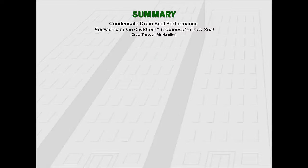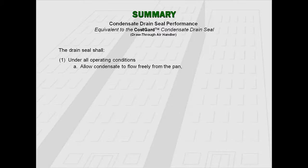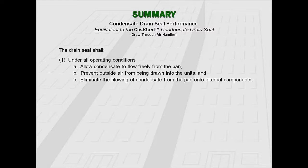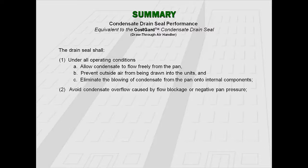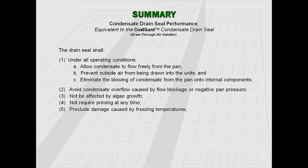A reliable equivalent to CostGuard condensate drain seals can be stated in terms of performance as follows. The drain seal shall, under all operating conditions: allow condensate to flow freely from the pan; prevent outside air from being drawn into the units and eliminate the blowing of condensate from the pan onto internal components; avoid condensate overflow caused by flow blockage or negative pan pressure; not be affected by algae growth; not require priming at any time; preclude damage caused by freezing temperatures; have no moving parts; be self-cleaning and self-regulating.